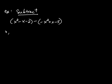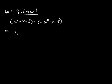Now let's try one involving subtraction. Once again we have one polynomial take away another. What's different about subtraction is that you have to distribute this negative sign. We think of it as a negative 1, and we distribute that negative 1 over the terms in the polynomial that follows. The first polynomial is unaffected, so you can just drop those parentheses, giving you x squared minus x minus 2.